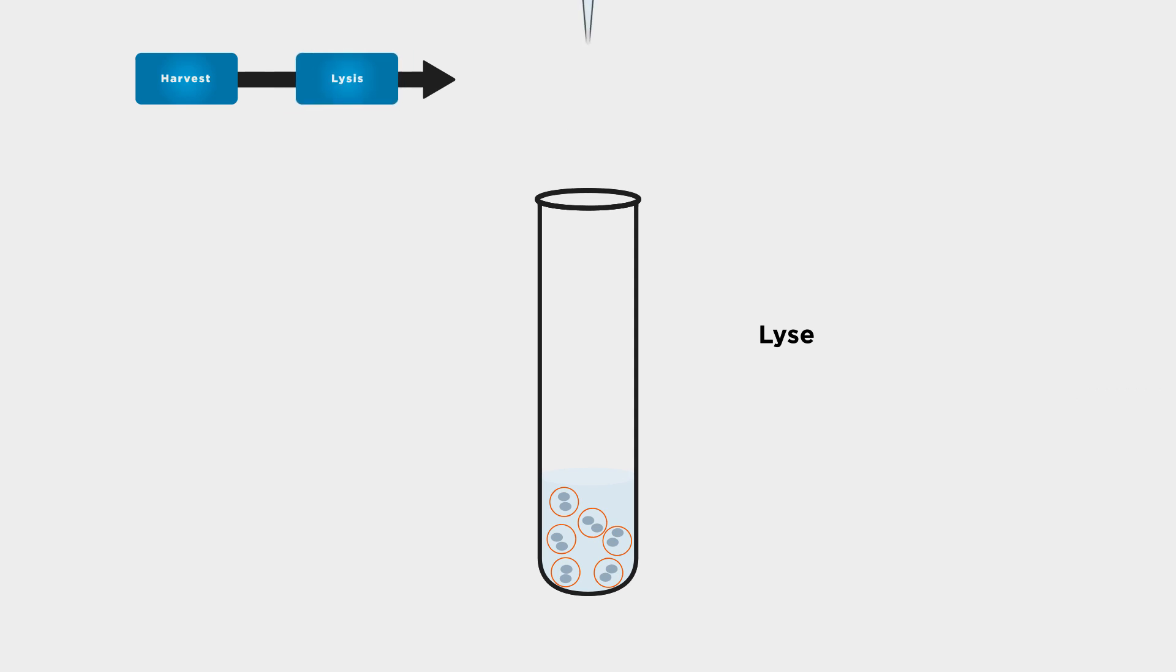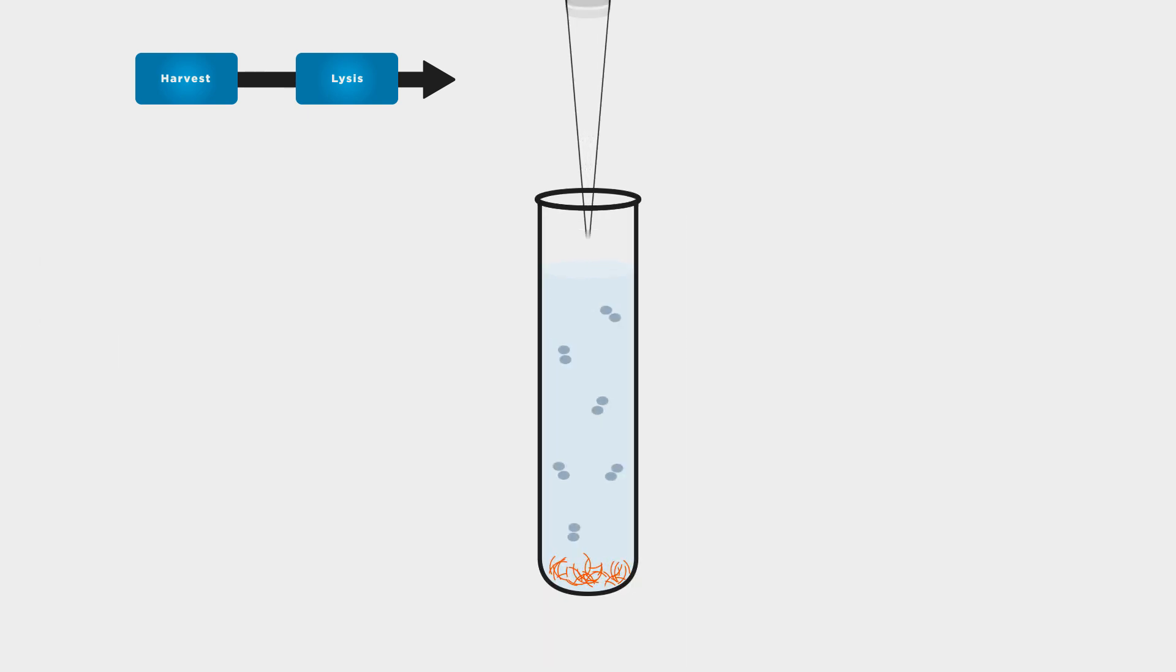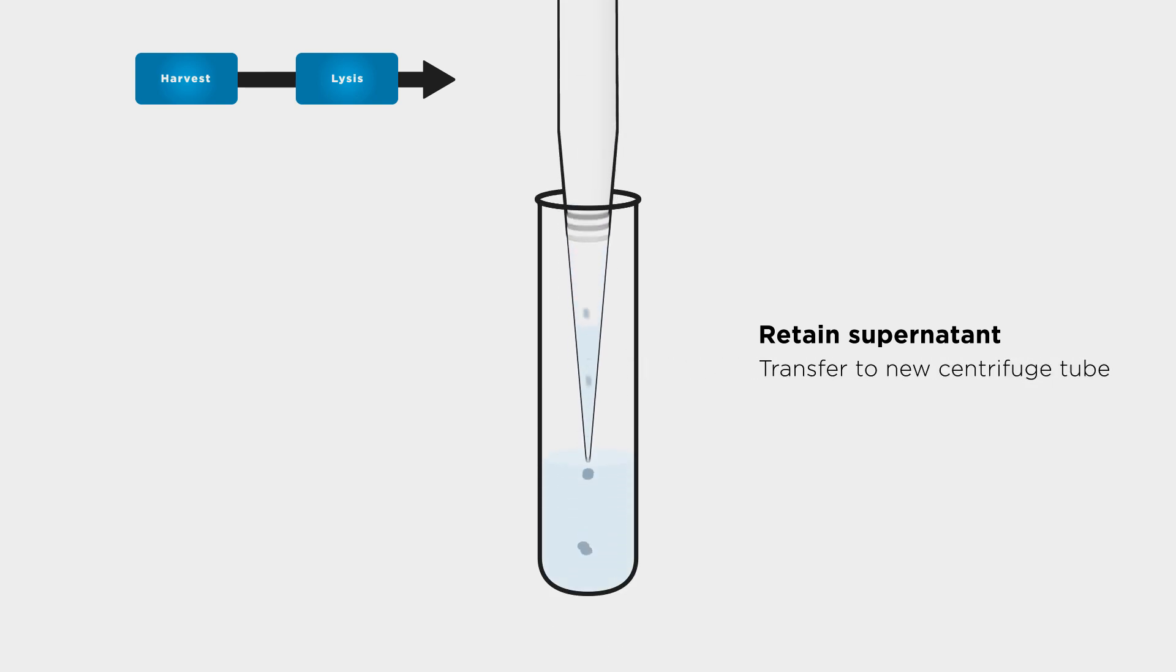Lyse the separated cells by chemical or mechanical shearing to release intracellular virus. Then, centrifuge the solution to sediment the heavy cellular fragments and debris, leaving the lighter viral fraction in solution. Retain the supernatant and transfer to a new centrifuge tube.